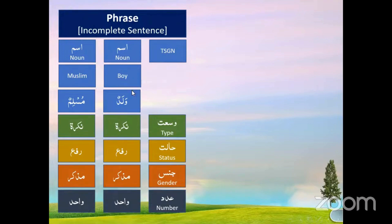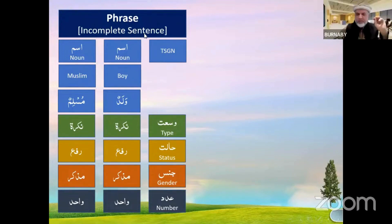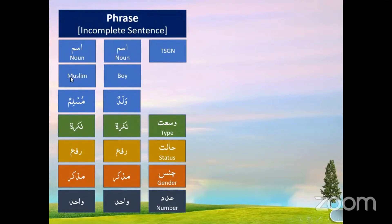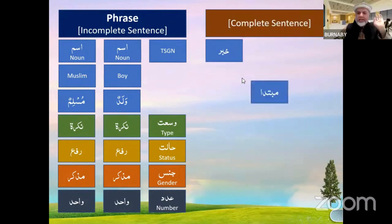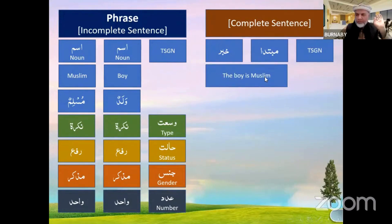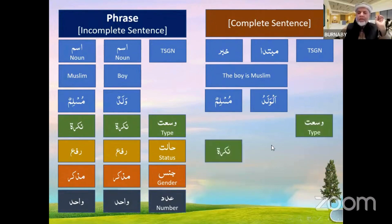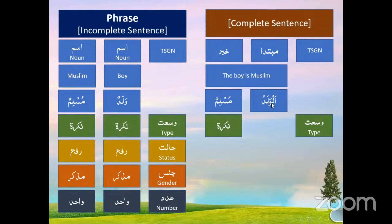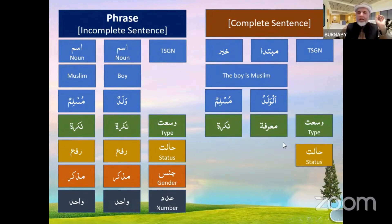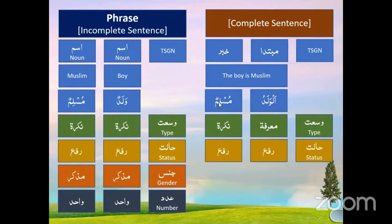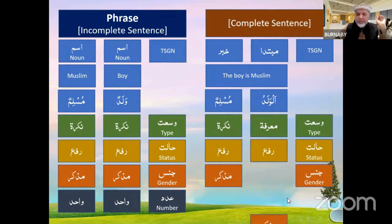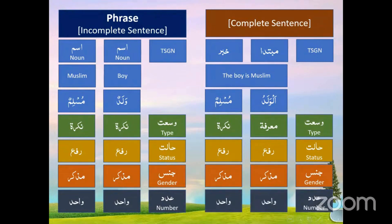Muslimun waladun is an incomplete sentence — there is no 'is.' But if I want to say 'the boy is muslim,' then we use al-waladu, because 'the boy' in Arabic requires the 'al.' Now al-waladu is marifa and muslimun is still nakira. Both are still rafa — al-waladu is rafa and muslimun is rafa — and both are mudakkar wahid. This is the complete sentence formed by the combination of marifa and nakira.